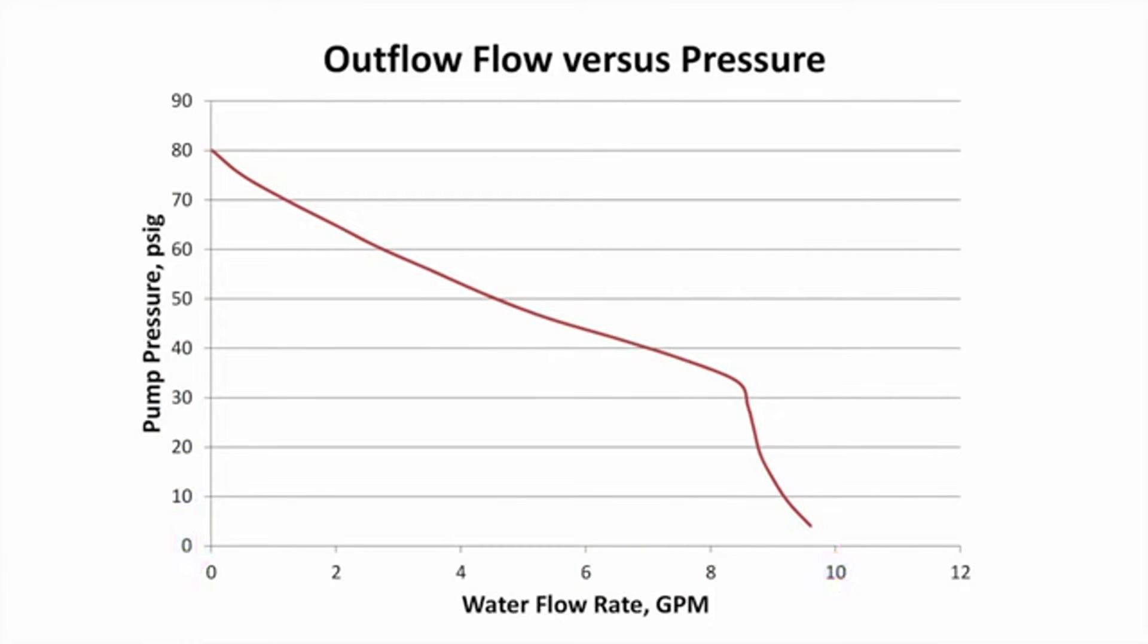The relationship of that pressure to flow is shown by this line. For every pressure, there is only one flow rate that the pump operates at. So in this case, 60 psi would provide a flow of almost 3 gallons per minute.